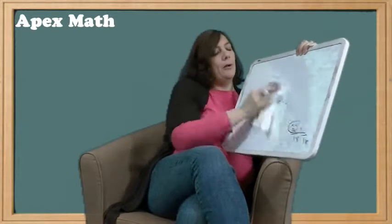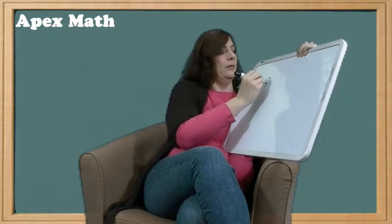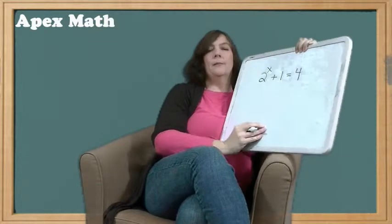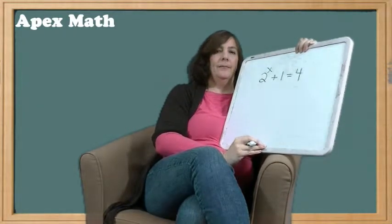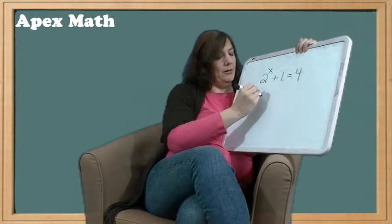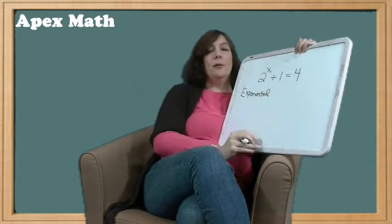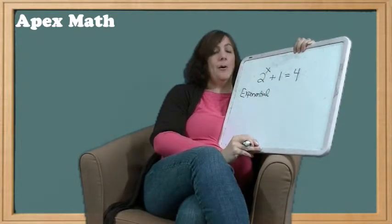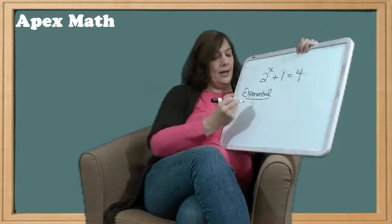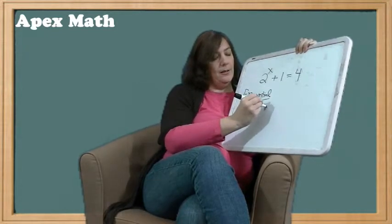The next type of equation would be something like this. Now what type of equation is this? Hopefully you responded that this is an exponential equation. How do you know it's an exponential equation? Because the variable is up here in that exponent position. So how do we solve exponential equations? Well, exponential equations are solved using logs and natural logs.